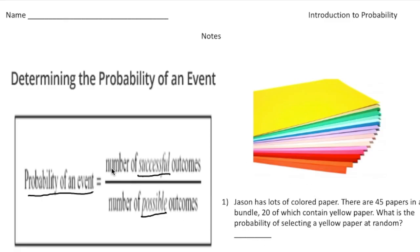Well, so we're going to have a fraction. And the number of successful outcomes, well that's going to be that we want the yellow, right? So the 20 is going to be on the top. And altogether there's 45 pieces of paper, so the 45 goes on the bottom.